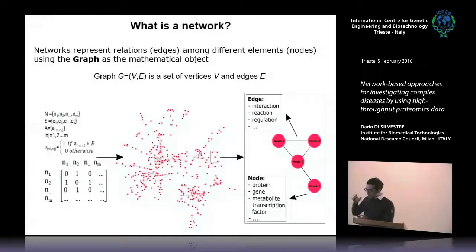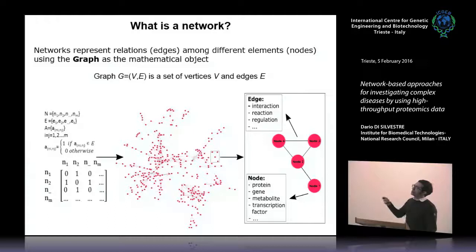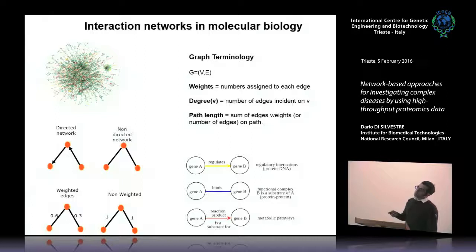A network at the mathematical level is represented by a sparse matrix, and visually by nodes — which may be proteins, genes, or metabolites — and edges. Each edge describes the relationship between two nodes, which may be a physical interaction, a reaction, or a regulation. Networks can be directed, undirected, or weighted, where edges represent probabilities such as the likelihood that an interaction is true.